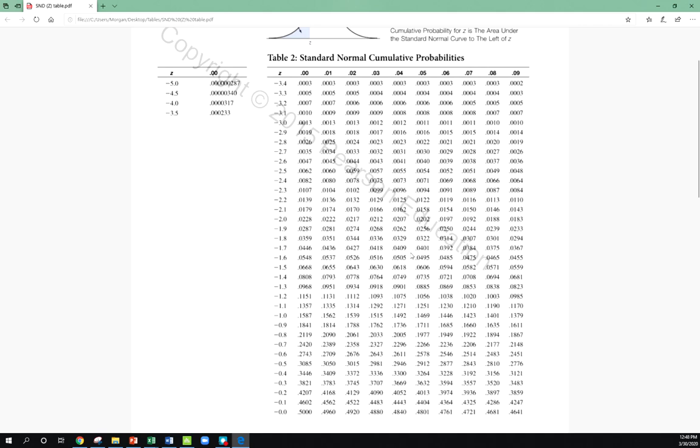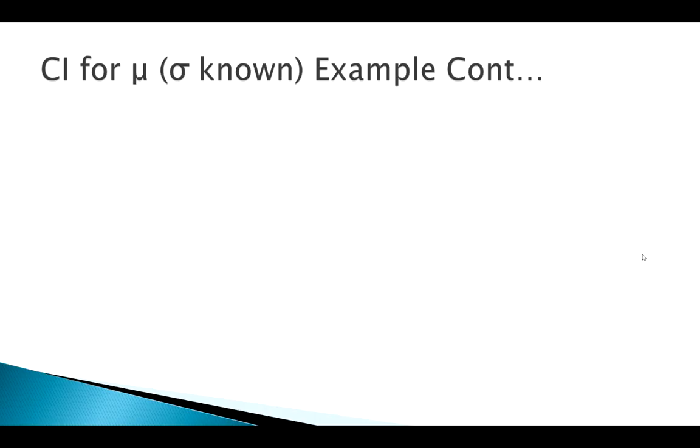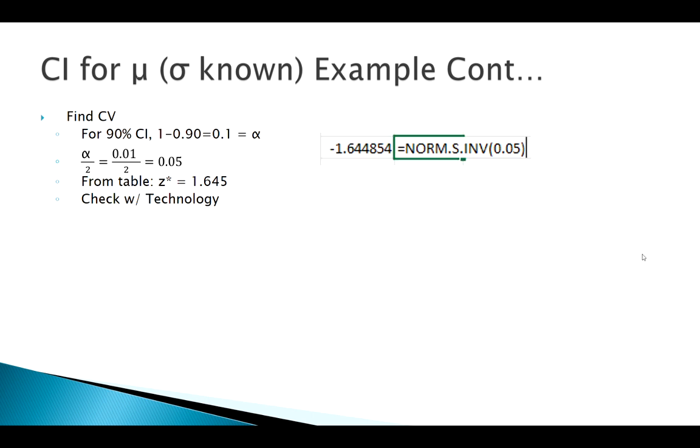We notice 0.05 is right between these two values, right between 1.64 and 1.65. So it'd be smarter to split the difference there and call it 1.645. Usually when we're dealing with 90%, the critical value we use is 1.645. I can check myself with technology, pop it into Excel.